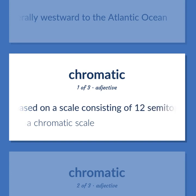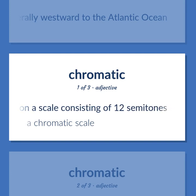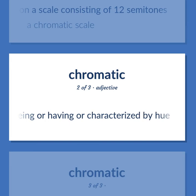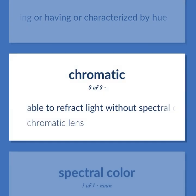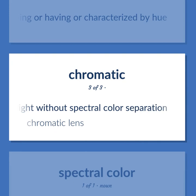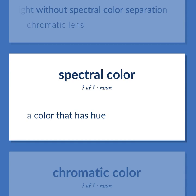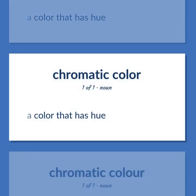Based on a scale consisting of 12 semitones — a chromatic scale. Being or having or characterized by hue. Able to refract light without spectral color separation — chromatic lens. A color that has hue.